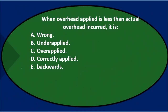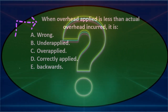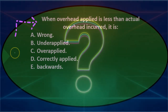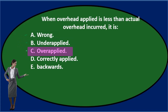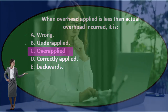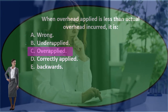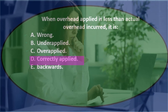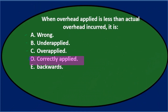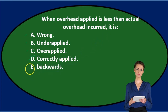Next question: when overhead applied is less than actual overhead incurred, it is either A: wrong — that could be, but I'll keep it for now — B: underapplied, or C: overapplied. Those two terms should sound familiar. D says correctly applied — something's wrong, but it's not that. And E says it's backwards — that doesn't seem to apply here, so I don't think it's E.